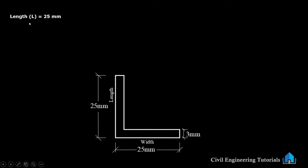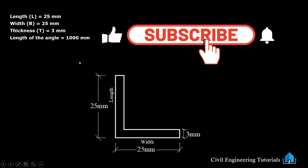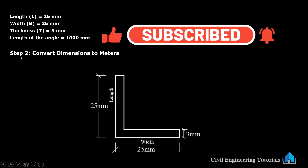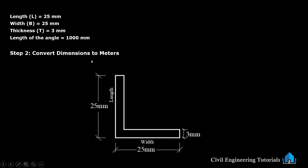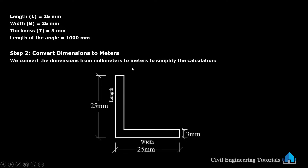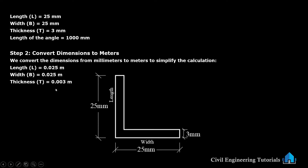Next step: convert dimensions to meters. We have to convert all the dimensions from millimeters to meters to simplify the calculation. Length 25 mm becomes 0.025 m, width 25 mm becomes 0.025 m, thickness 3 mm becomes 0.003 m — just divide by 1000. Length of the angle 1000 mm becomes 1 meter.